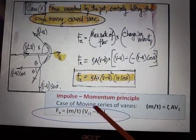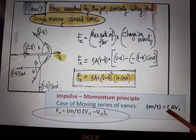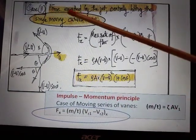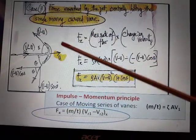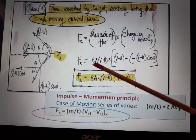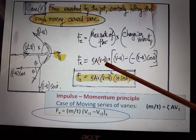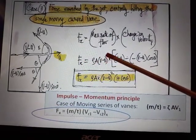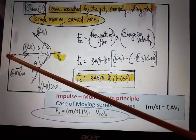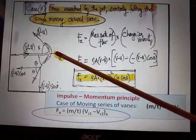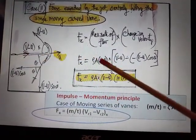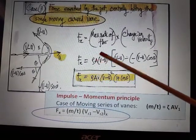If it is a series of vanes then mass rate of flow becomes ρ*A*V1, because it was a single moving vane, the mass rate of flow was ρ*A*(V minus u) or ρ*A*Vr. Vr is the relative velocity because you know that the jet and the vane are moving in the same line, because of that relative velocity becomes V minus u.